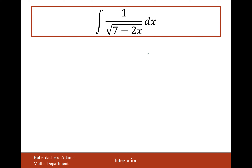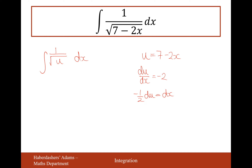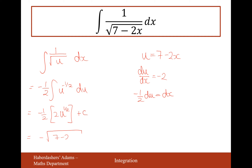Similarly, u = 7 − 2x. The integral is 1/√u dx. Differentiating: du/dx = −2, so dx = −(1/2) du. Replacing and factorising the −1/2 out front, we integrate u^(−1/2): increasing the power to 1/2, dividing gives 2. The 2 and −1/2 cancel, leaving the answer as −√(7 − 2x) + c.